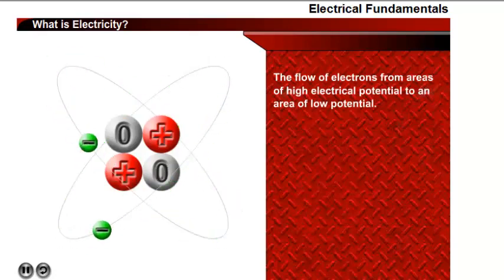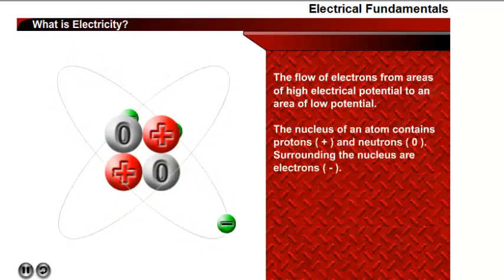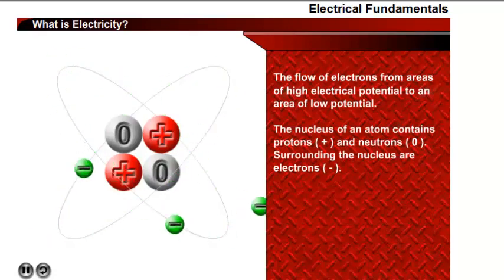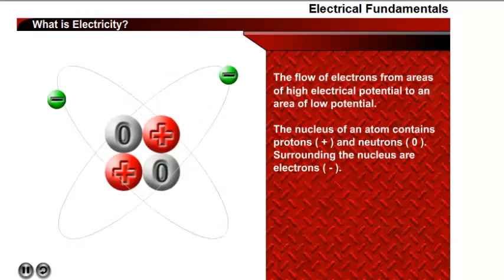All matter is made up of atoms, and the center of an atom is the nucleus. The nucleus contains positively charged particles called protons and uncharged particles called neutrons. Surrounding the nucleus are negatively charged particles called electrons.